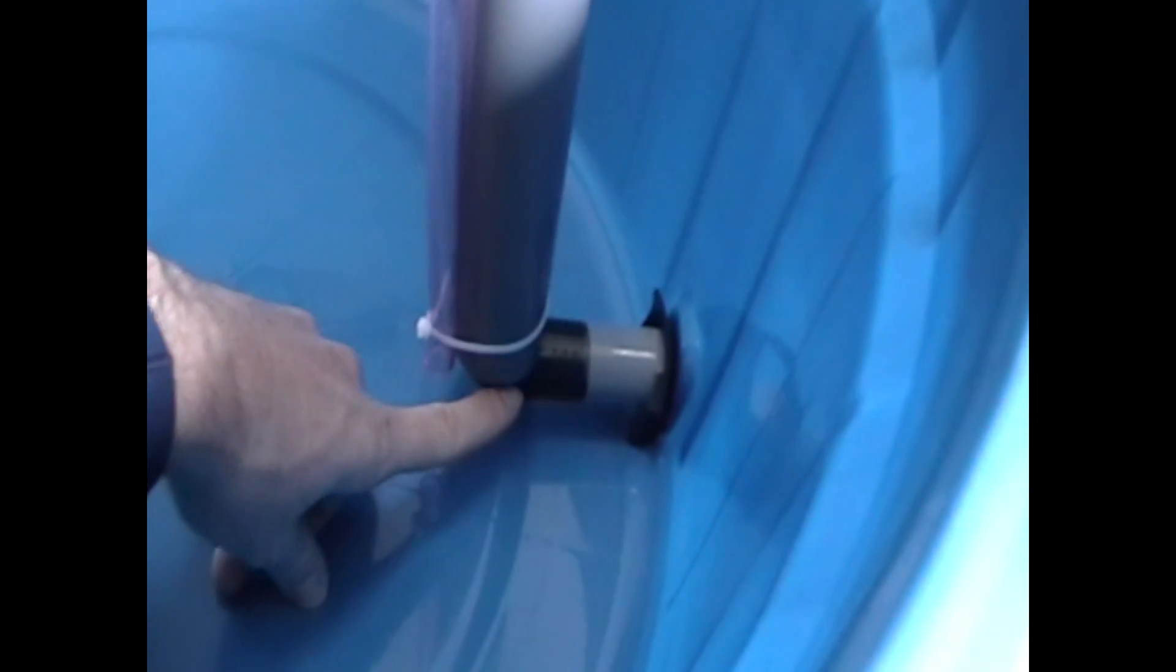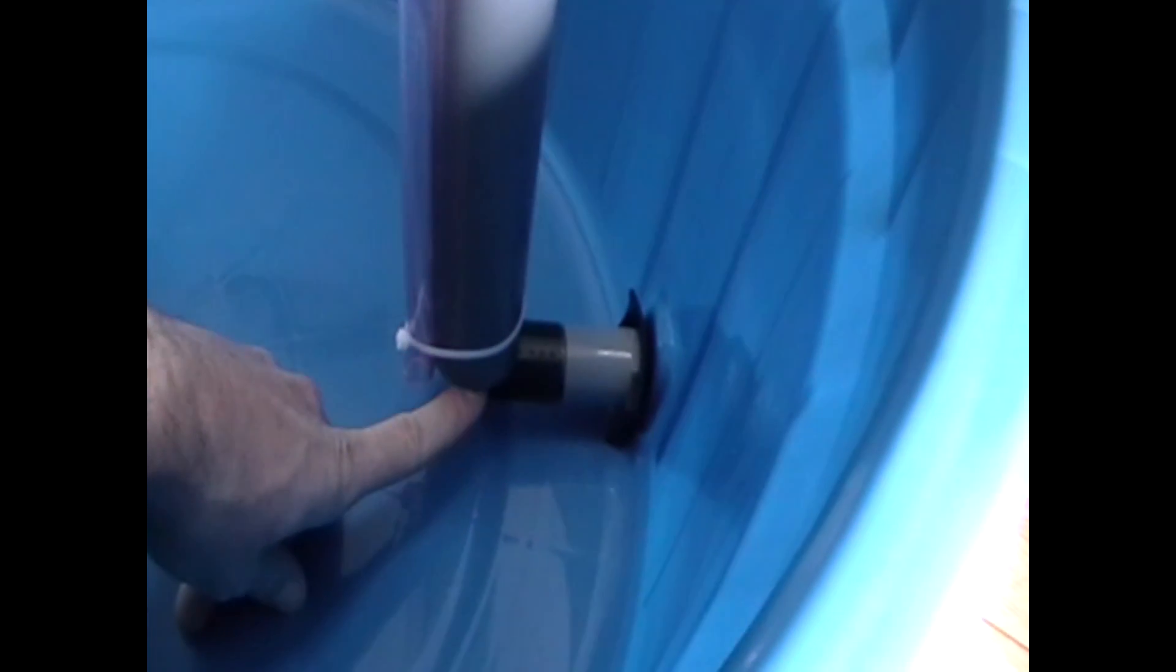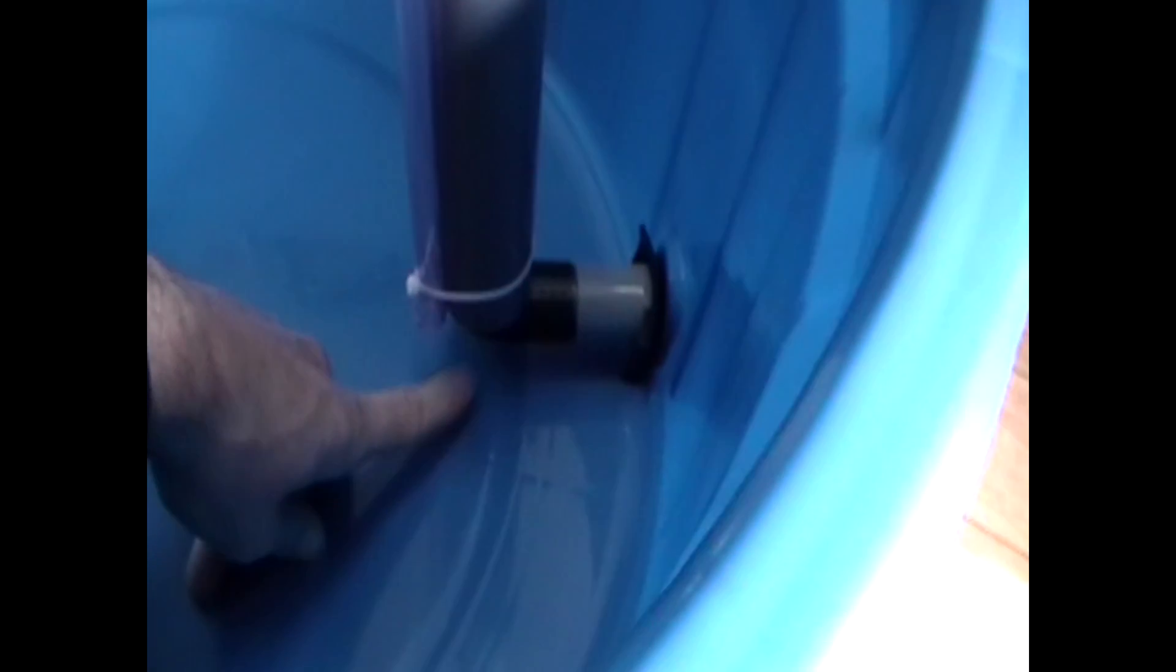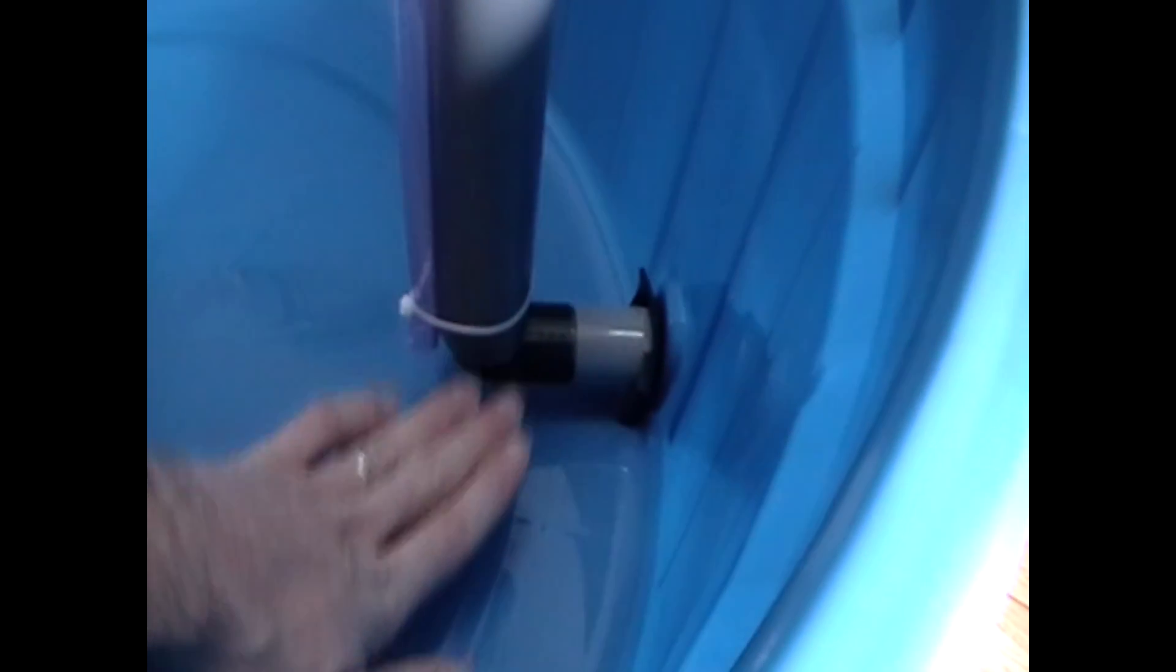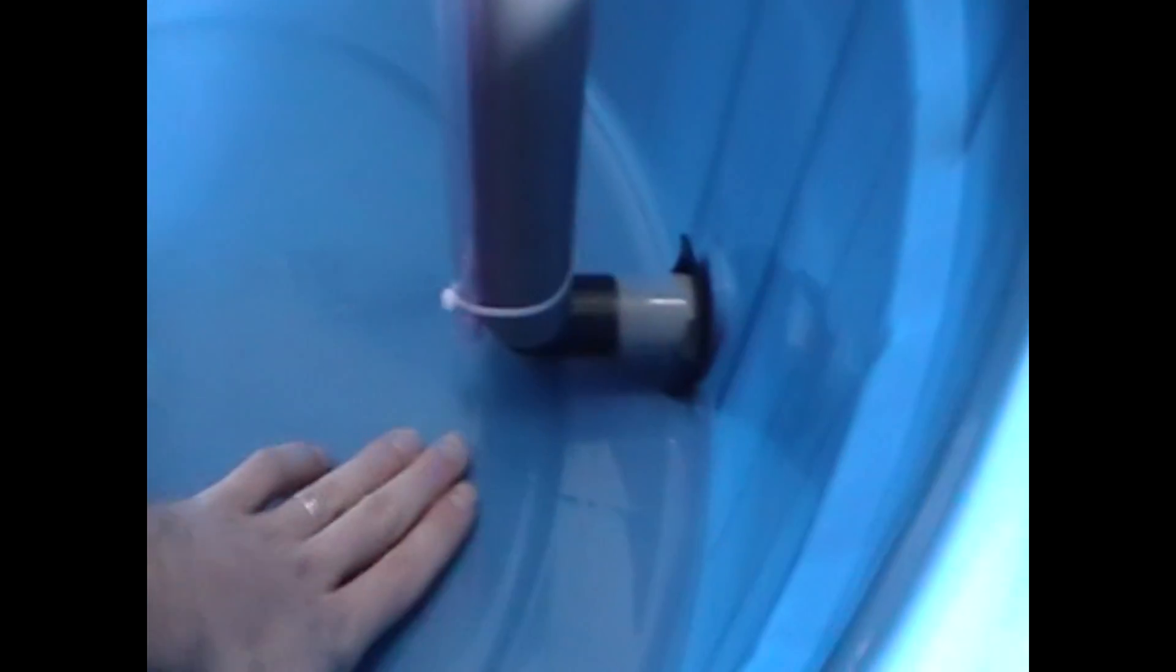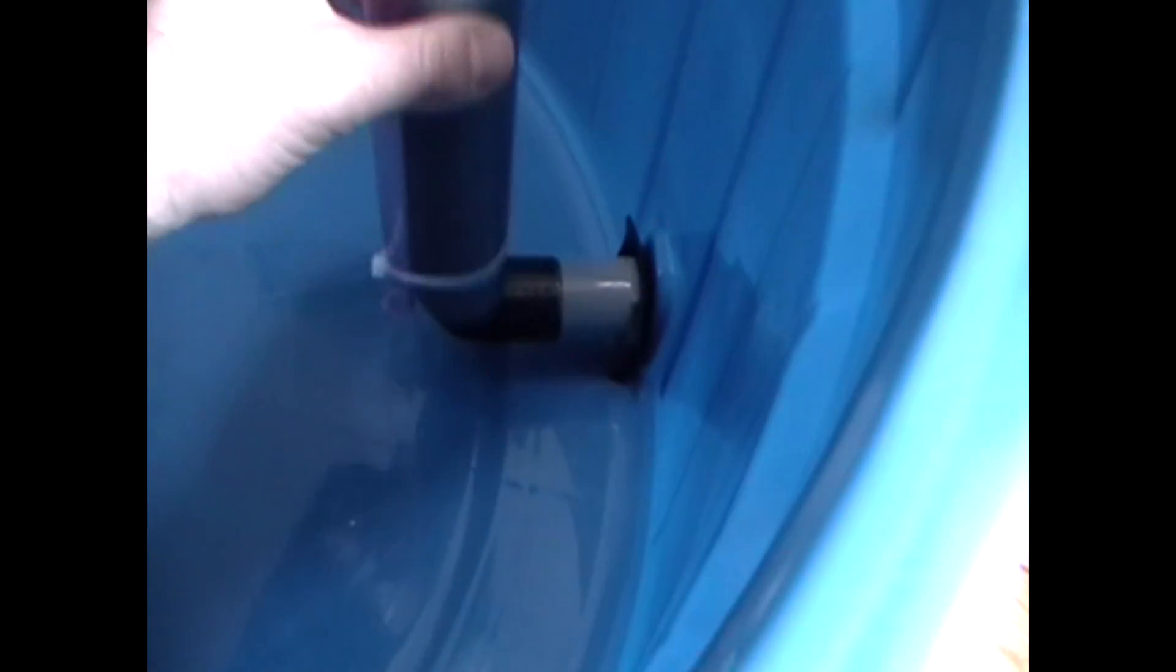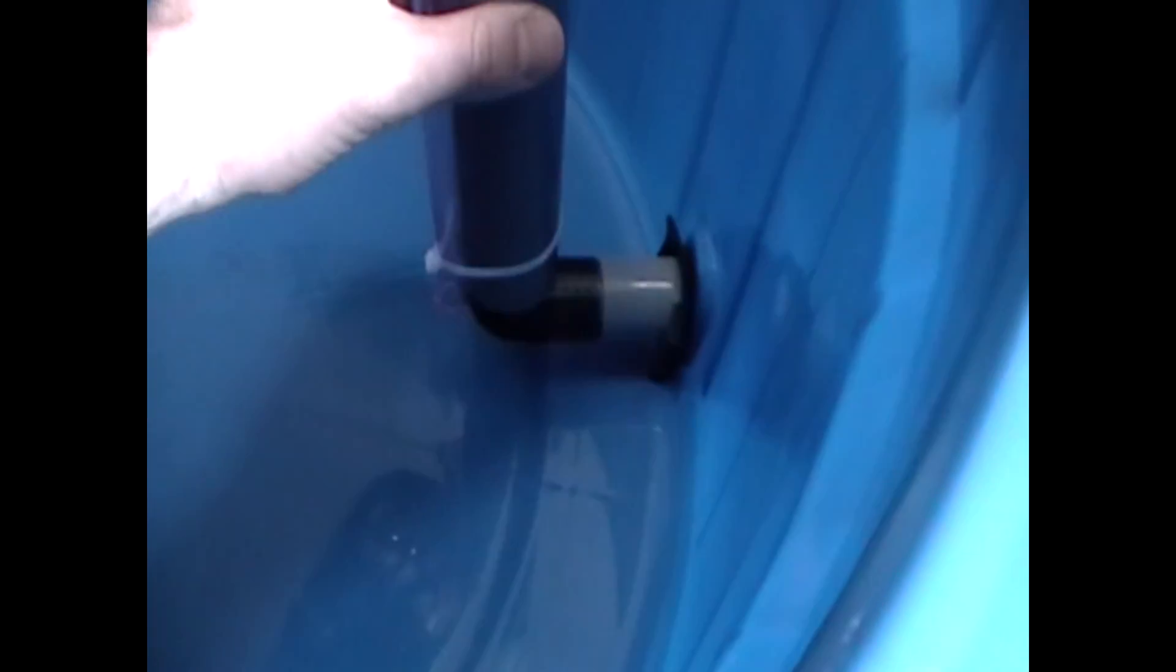Notice how the bell siphon does not touch the bottom of the tank. This is a good thing because I actually want about two inches or so of water to always stay. This level will always have water in it. That's a good thing based on the research I've done.